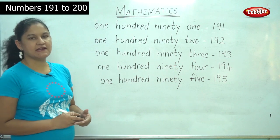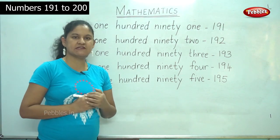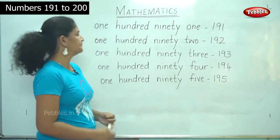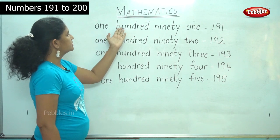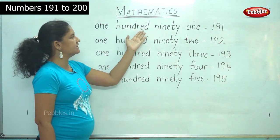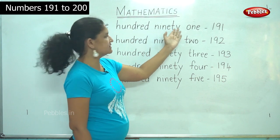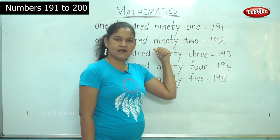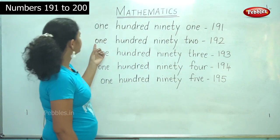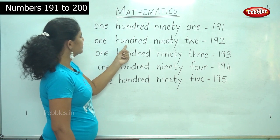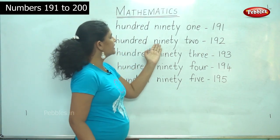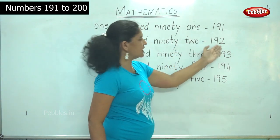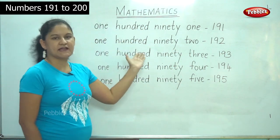So shall we say the numbers again — I hope you are repeating along with me so that it will get registered in your mind faster. 191: O-N-E H-U-N-D-R-E-D N-I-N-E-T-Y O-N-E. 1-9-1. 192: O-N-E H-U-N-D-R-E-D N-I-N-E-T-Y T-W-O. 1-9-2.